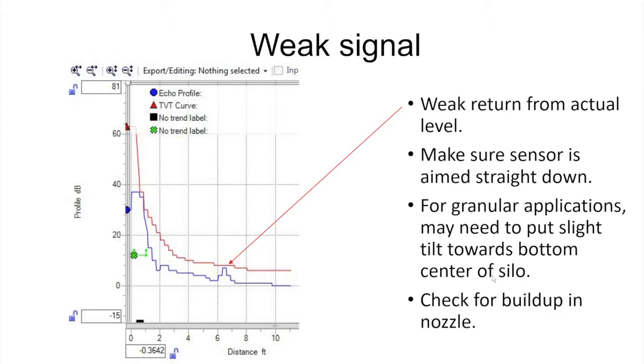So what can cause a weak signal? First thing we want to look at is to make sure that the level sensor for liquid applications is pointed straight down so we bounce straight off the liquid level back up to the receiver. For granular applications I'd say probably 80 percent of the time I do point straight down, but there are some instances where you want to tilt the sensor towards the bottom center of the silo to get a stronger return.